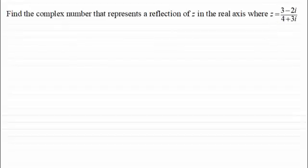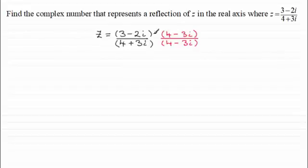So if you put z down as 3 minus 2i, all over 4 plus 3i. When we do a division, we need to multiply top and bottom by the complex conjugate of the denominator. So you need to multiply top and bottom by 4 minus 3i. And if you do that, you should have something like this. Remember, you're multiplying by 1, so it's not going to change the value of this fraction here.